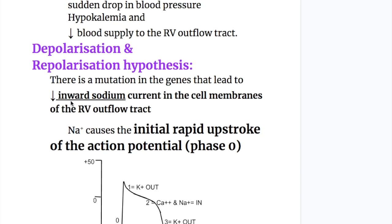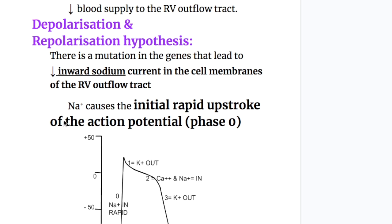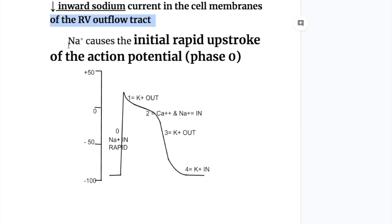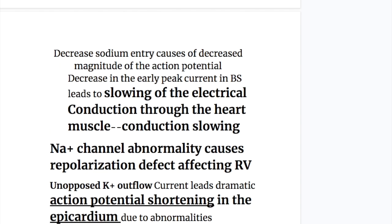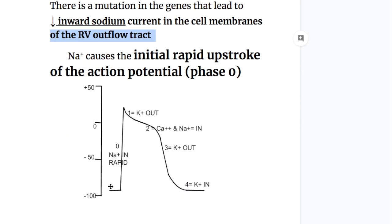In the depolarization and repolarization hypothesis of Brugada syndrome, there is a mutation in the genes that leads to decreased inward sodium current in the cell membrane of the right ventricular outflow tract. Sodium causes a rapid rise in the initial upstroke of the action potential — phase zero — where it causes rapid entry into the cell. Decreased sodium entry causes decreased magnitude of the action potential.